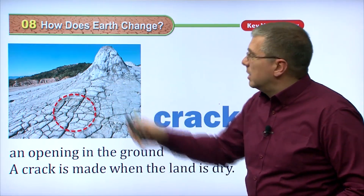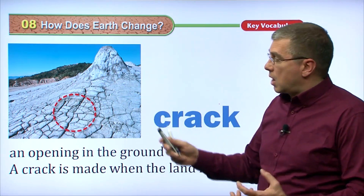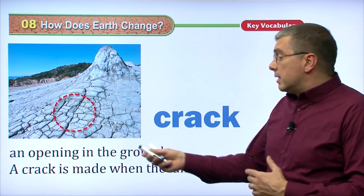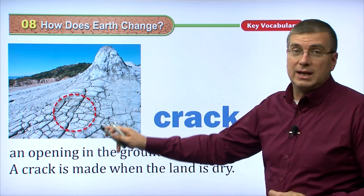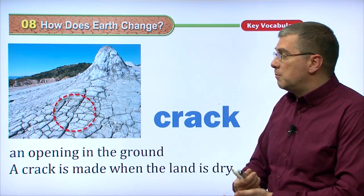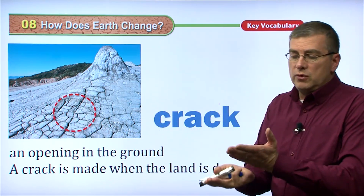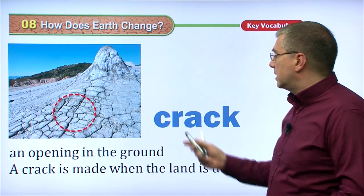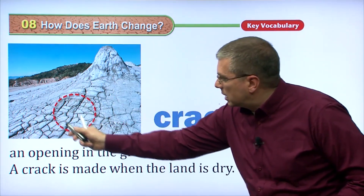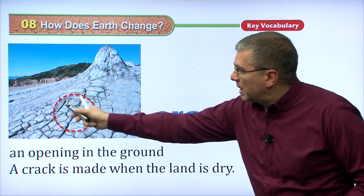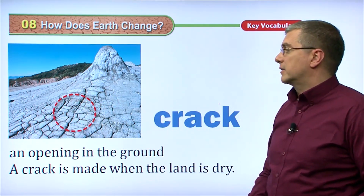Now, this is in rock, so it could be because there's no water, or it could just be because the rock is very hard. There are other reasons why ground cracks — not just because of dryness, but other impacts. An impact could crack the land. If the land is shifting or moving, that could also crack the land. But we call these things cracks — these openings in the spaces between the rock on the surface. Those are cracks.